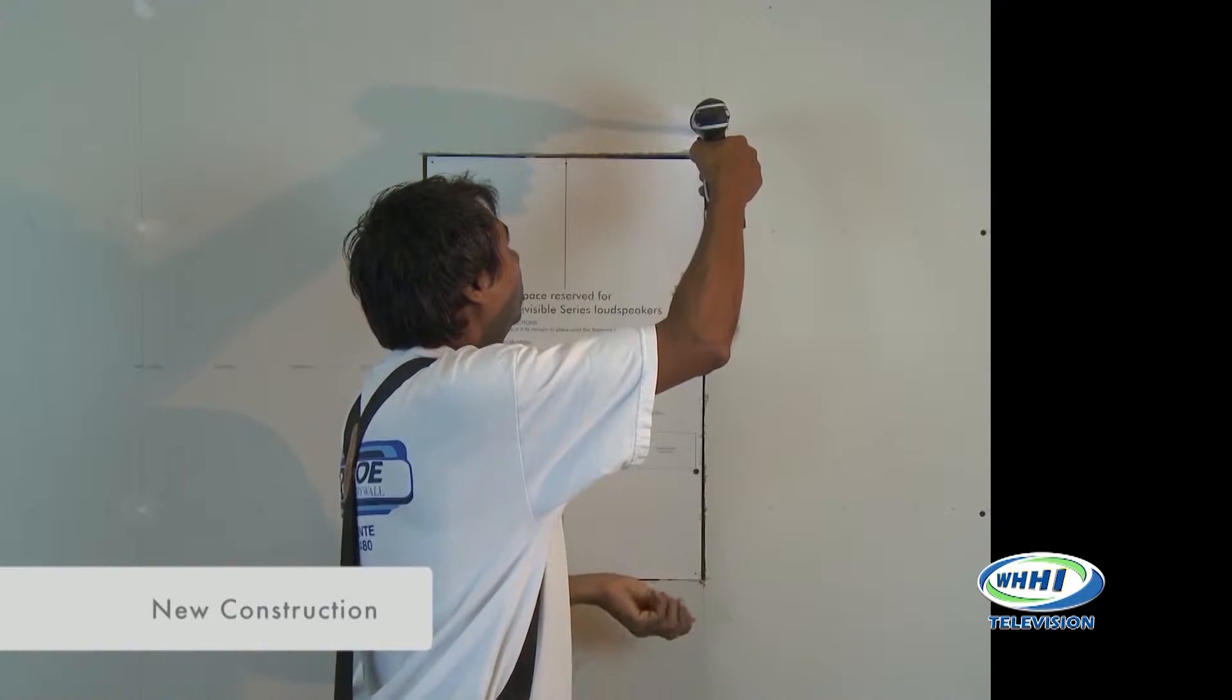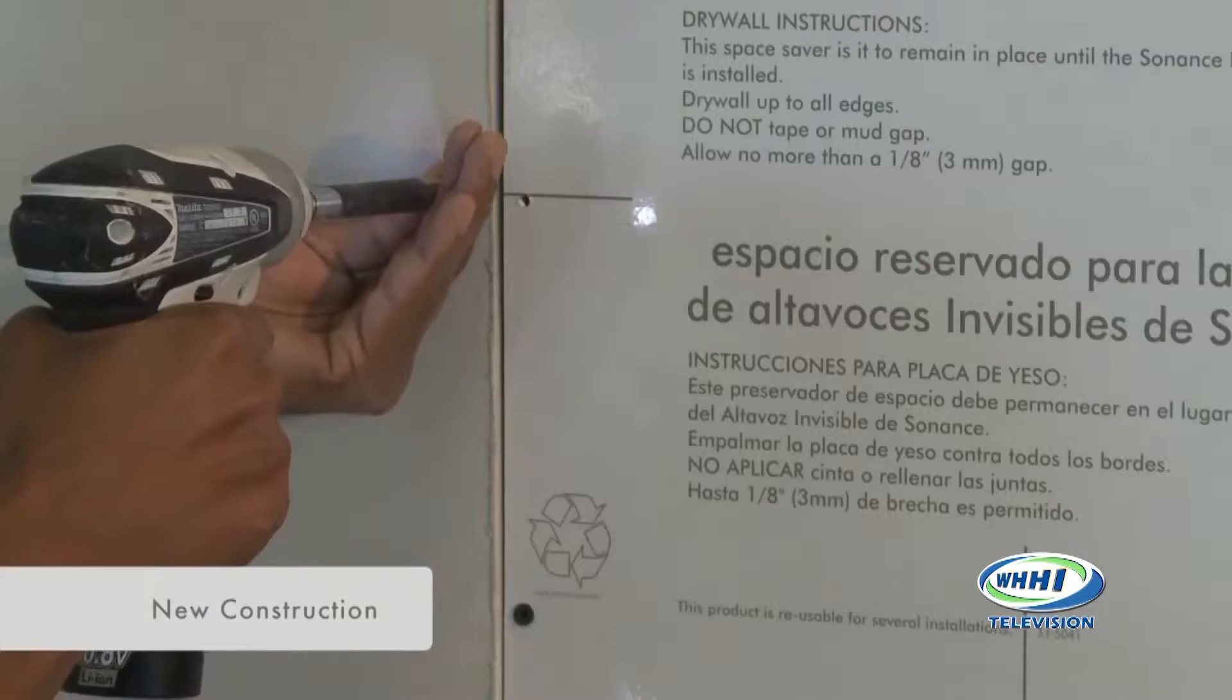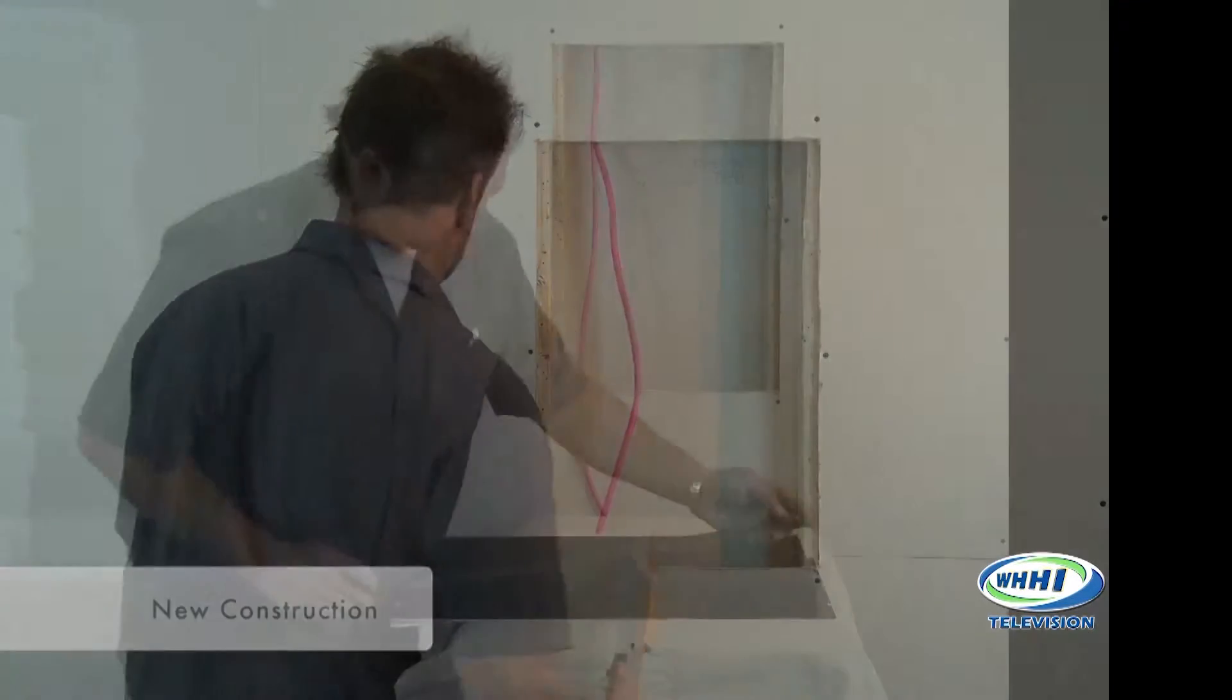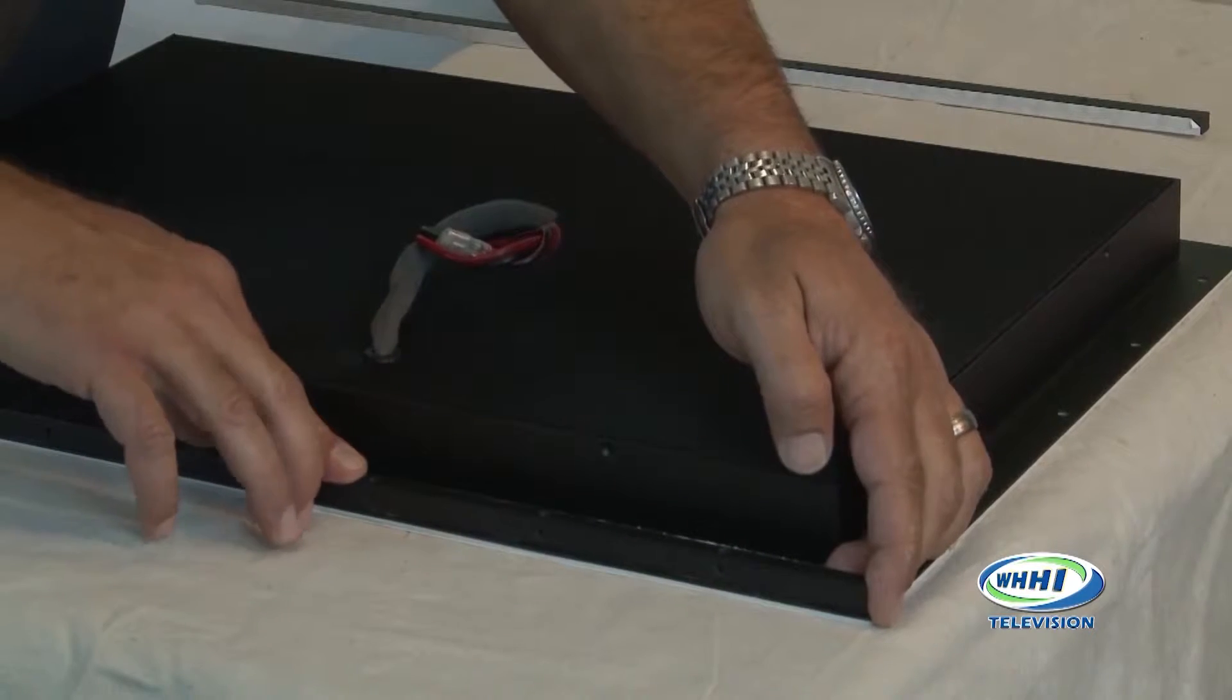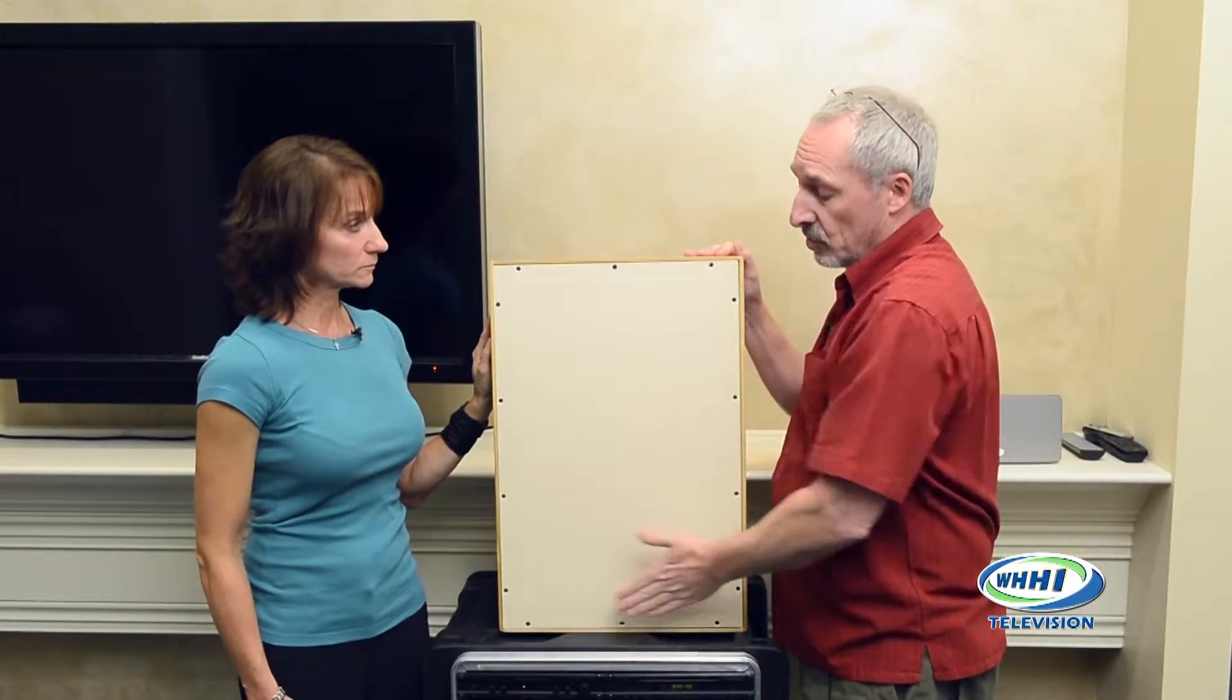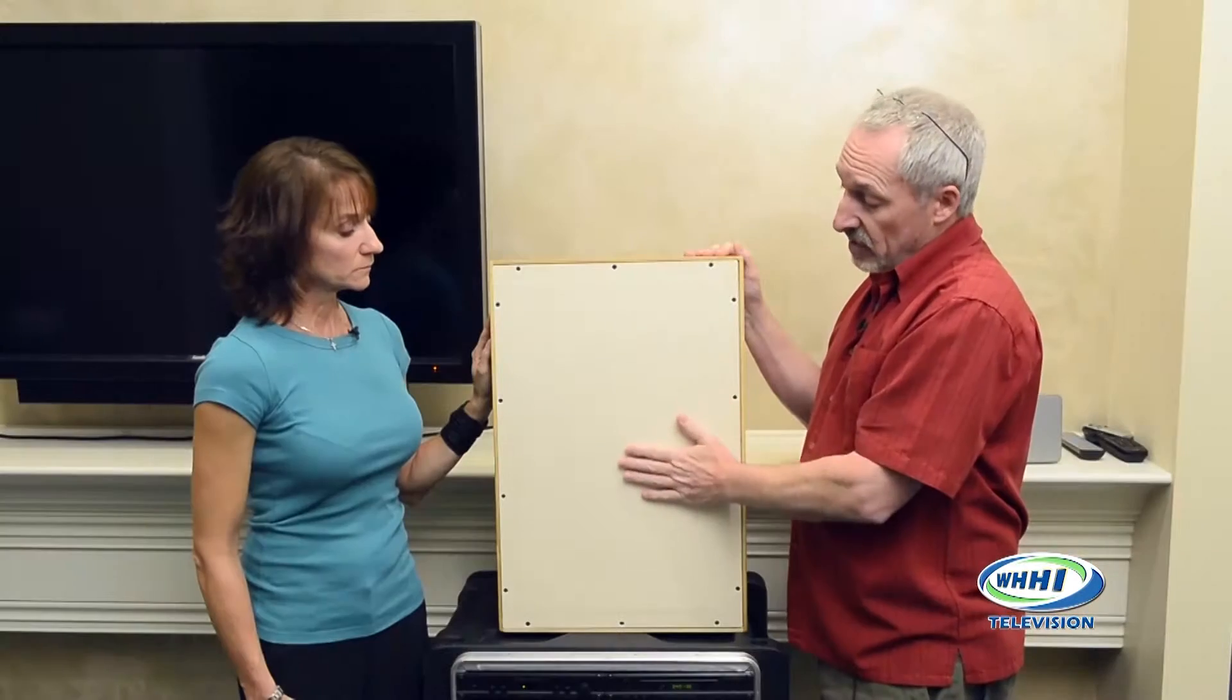So now imagine that this is all drywall. Just before the drywall is finished, we would come along and actually put this part of it in. And behind here there's a framework which holds speakers in place, and then we shim it all so that it's level with the drywall around, screw it in here.